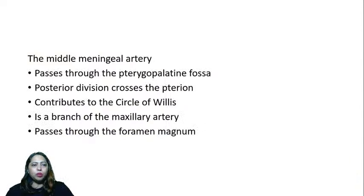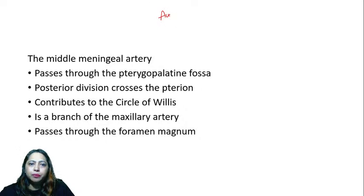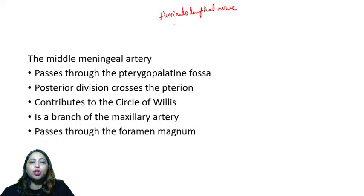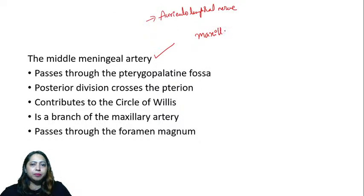Next question: the middle meningeal artery. It is also looped by the auriculotemporal nerve. The middle meningeal artery is a branch from the maxillary artery. From the neck, it goes toward the brain — in the sense it supplies the meninges.